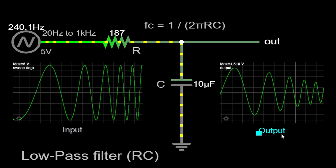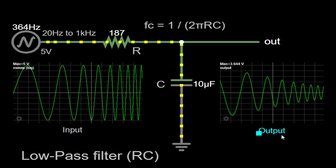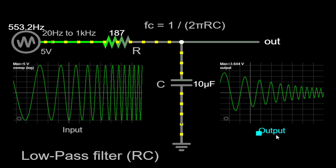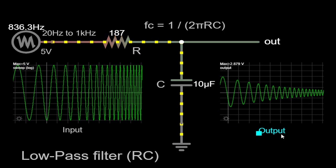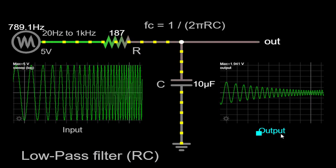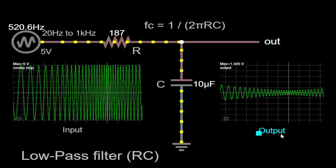The second signal displayed is the output waveform, demonstrating the filtered signal after passing through the RC low-pass filter. It allows us to observe how the filter affects different frequency components.